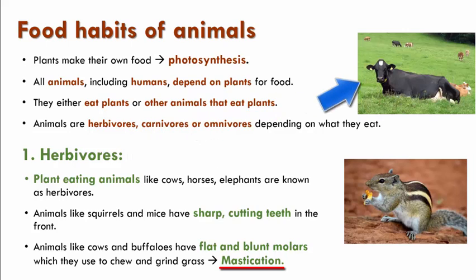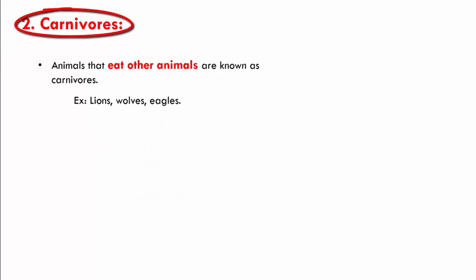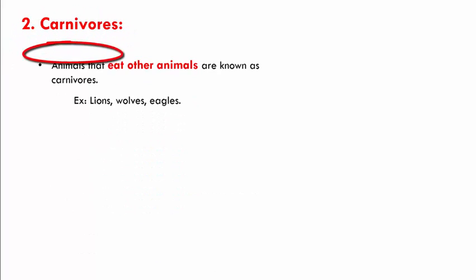If you observe cows on the road or in a garden, you will see them sitting in one place and chewing. This process is known as mastication. Animals that eat other animals are known as carnivores.